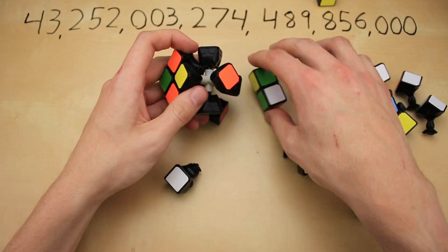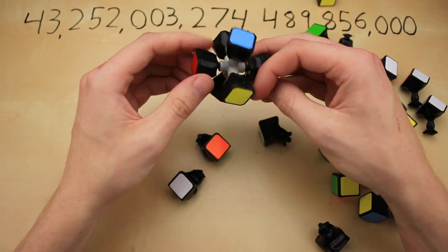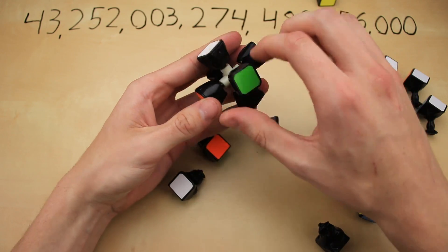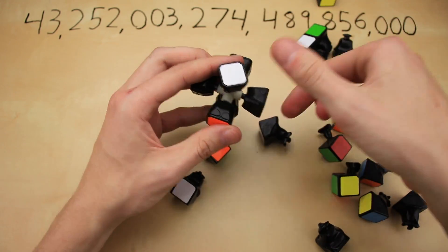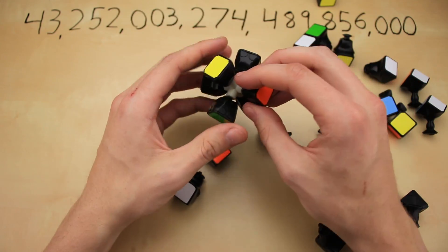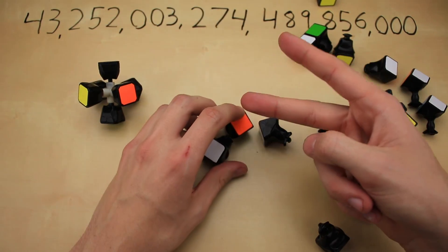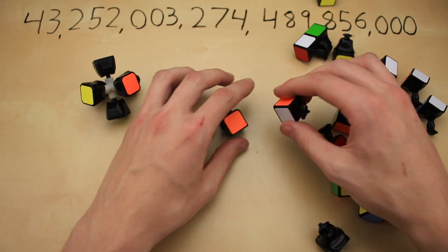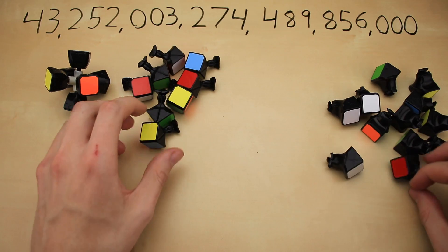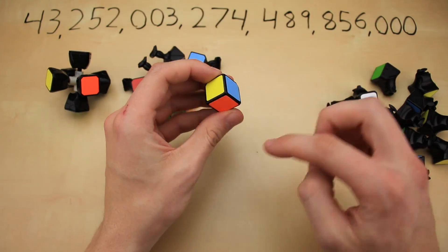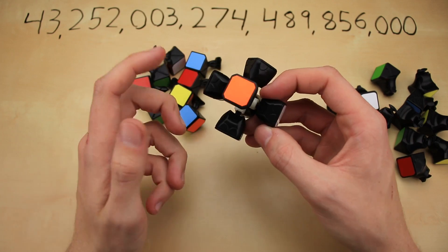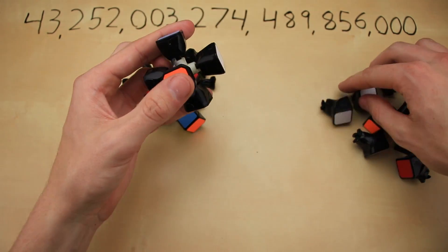These center pieces do not matter for our calculations at all. You can think of these centers as a reference frame from which all the rest of the pieces are attached onto the cube. Because all six centers are attached right in the middle, you can never actually separate them. Just turning it isn't going to change the number of positions on the cube, and of course you can never physically swap two colors around. So this has no actual impact on the number of total permutations. The other two types of pieces are held together by the core: you have 12 edge pieces, each with two color stickers, and 8 corner pieces, each with three color stickers.